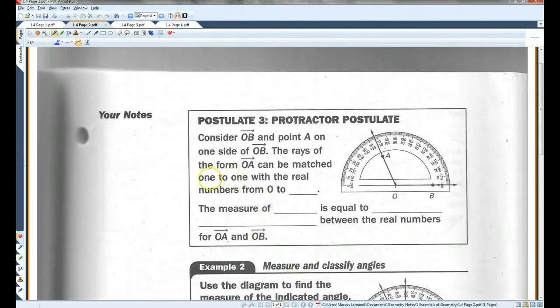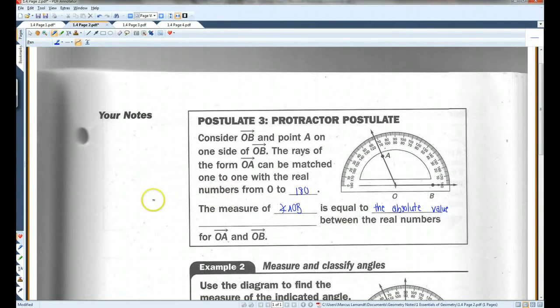Let's go on to page two. Postulate three, protractor postulate. Consider OB and point A on one side of OB. The rays of the form OA can be matched one to one with the real numbers from zero to 180. The measure of angle AOB is equal to the absolute value of the difference between the real numbers for OA and OB. In this case, it looks like 113 degrees, roughly.